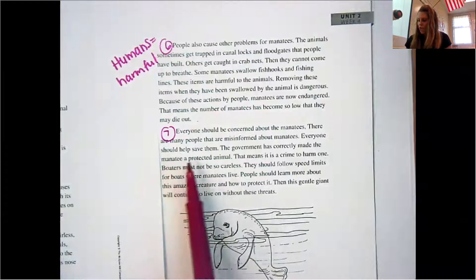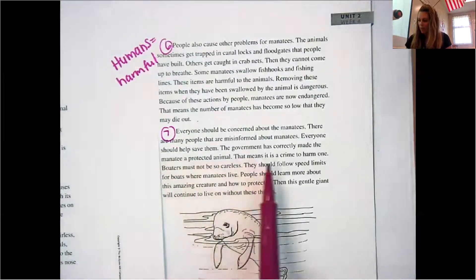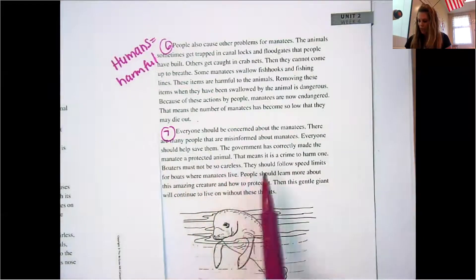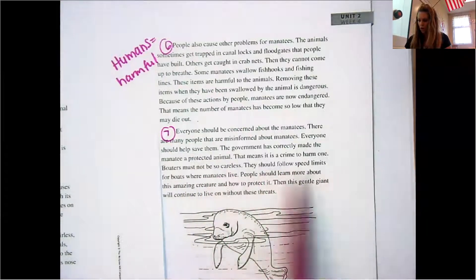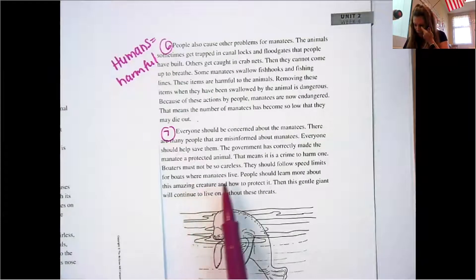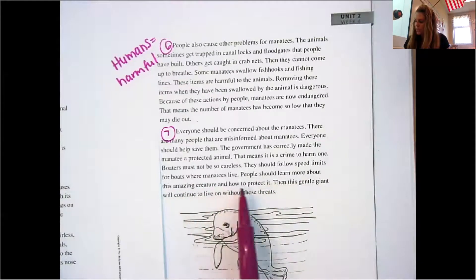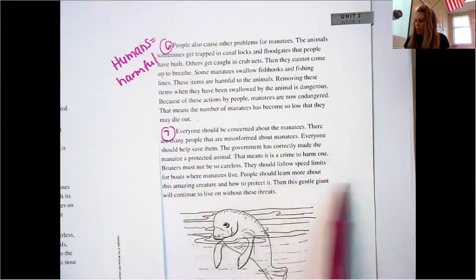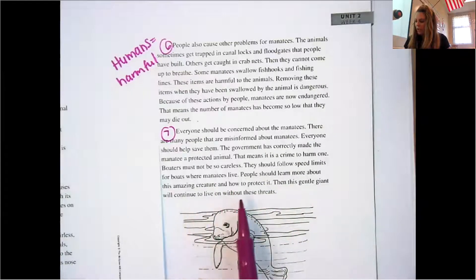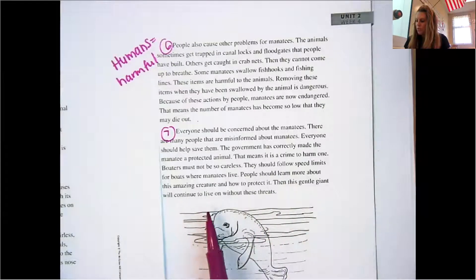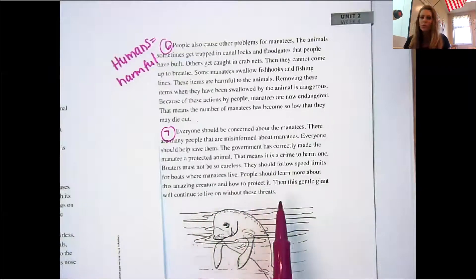And then everyone should be concerned about manatees. There are many people that are misinformed about manatees. Everyone should help save them. The government has correctly made the manatee a protected animal. That means it is a crime to harm one. Boaters must not be so careless. They should follow speed limits for boats where manatees live. People should learn more about this amazing creature and how to protect it. Then this gentle giant will continue to live on without those threats.